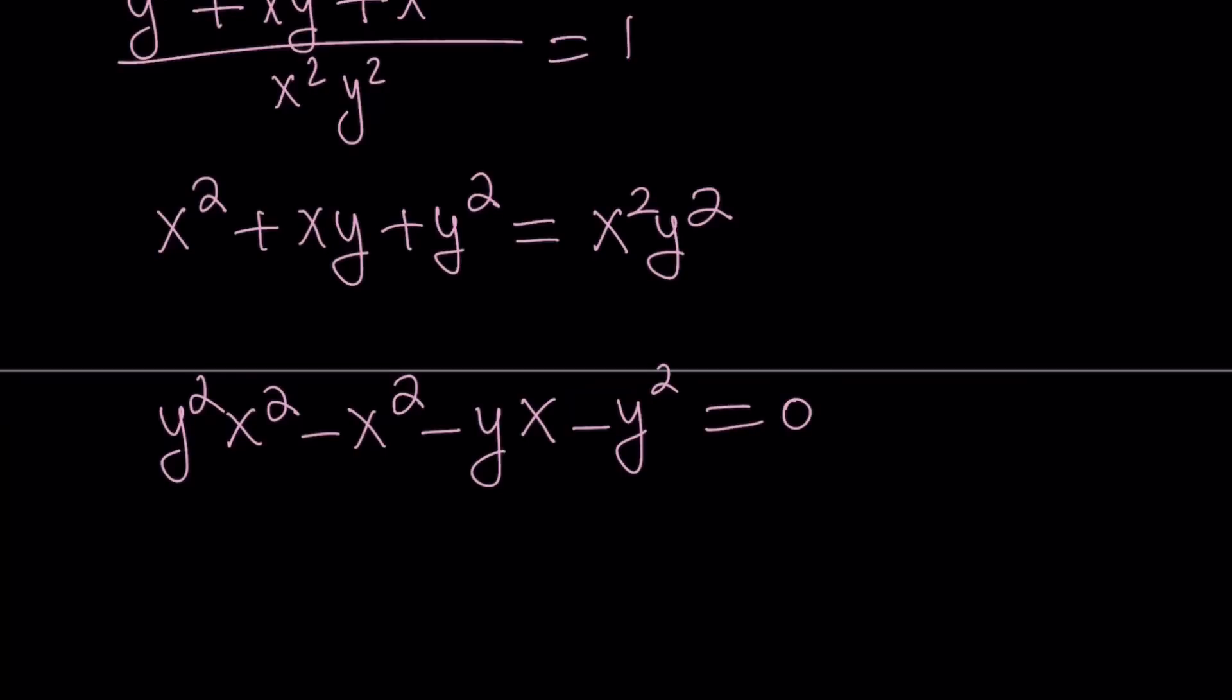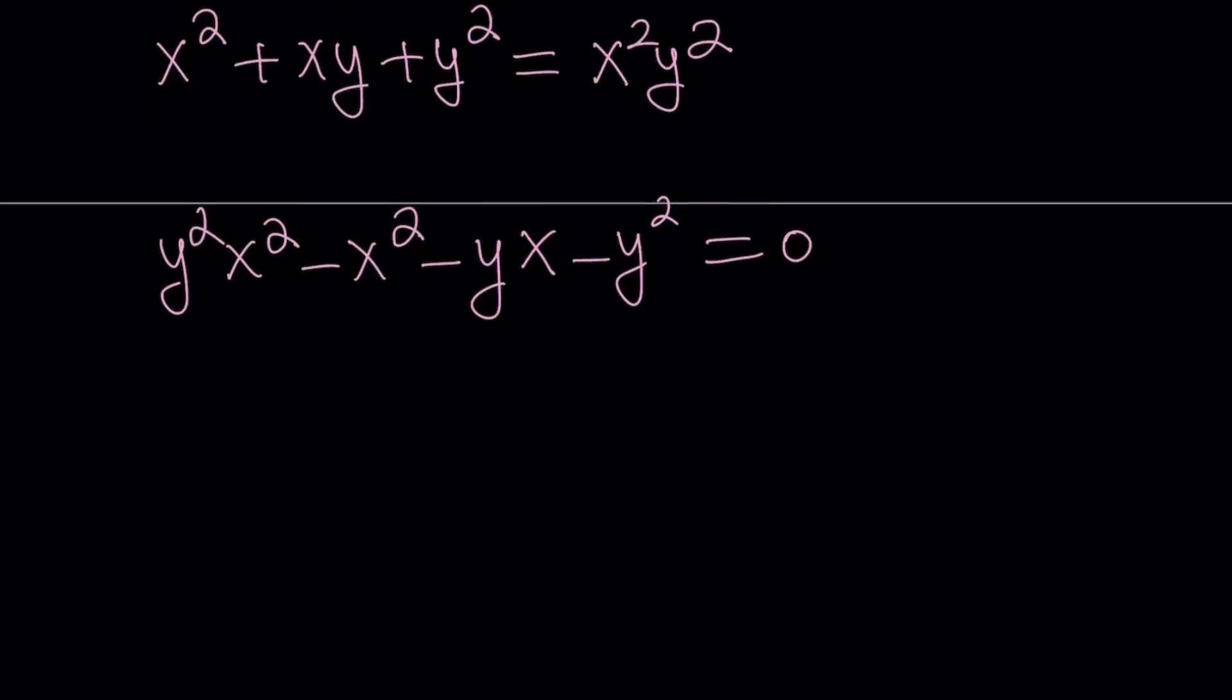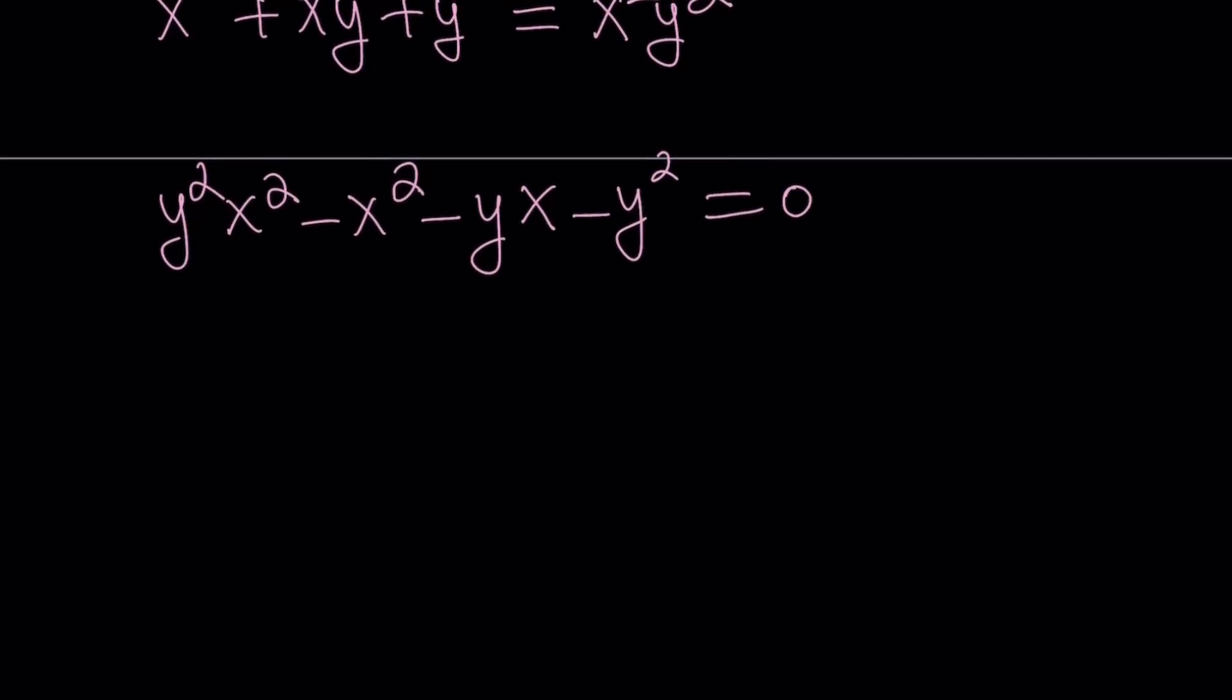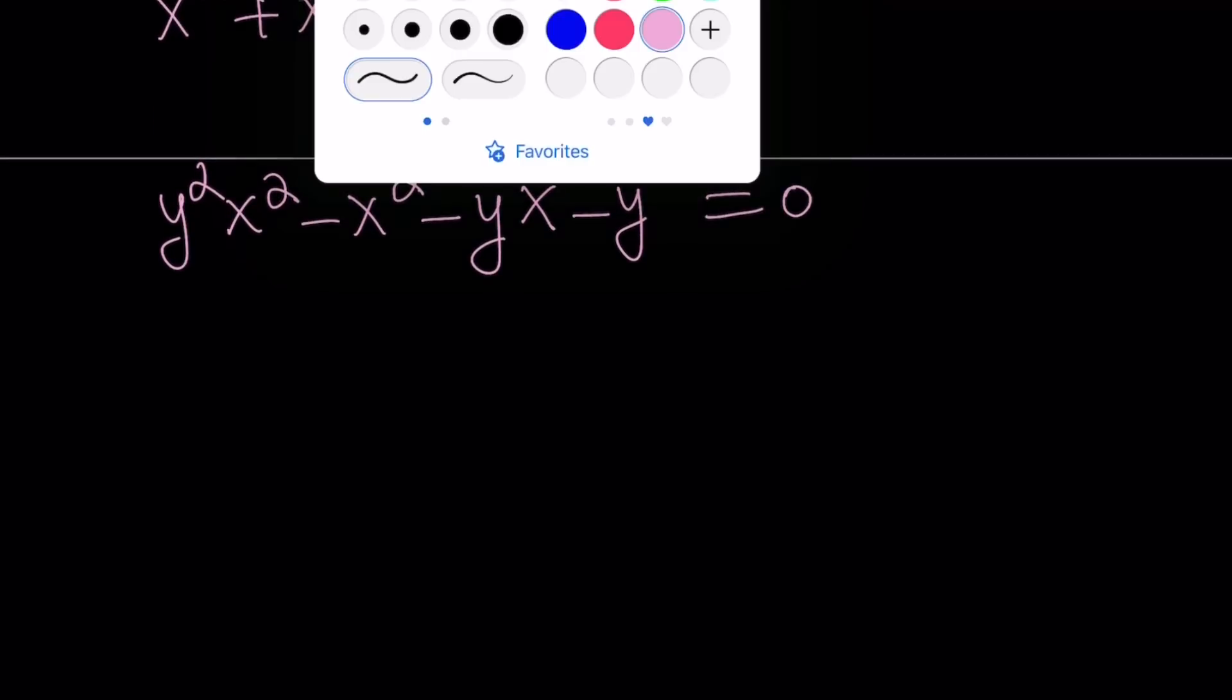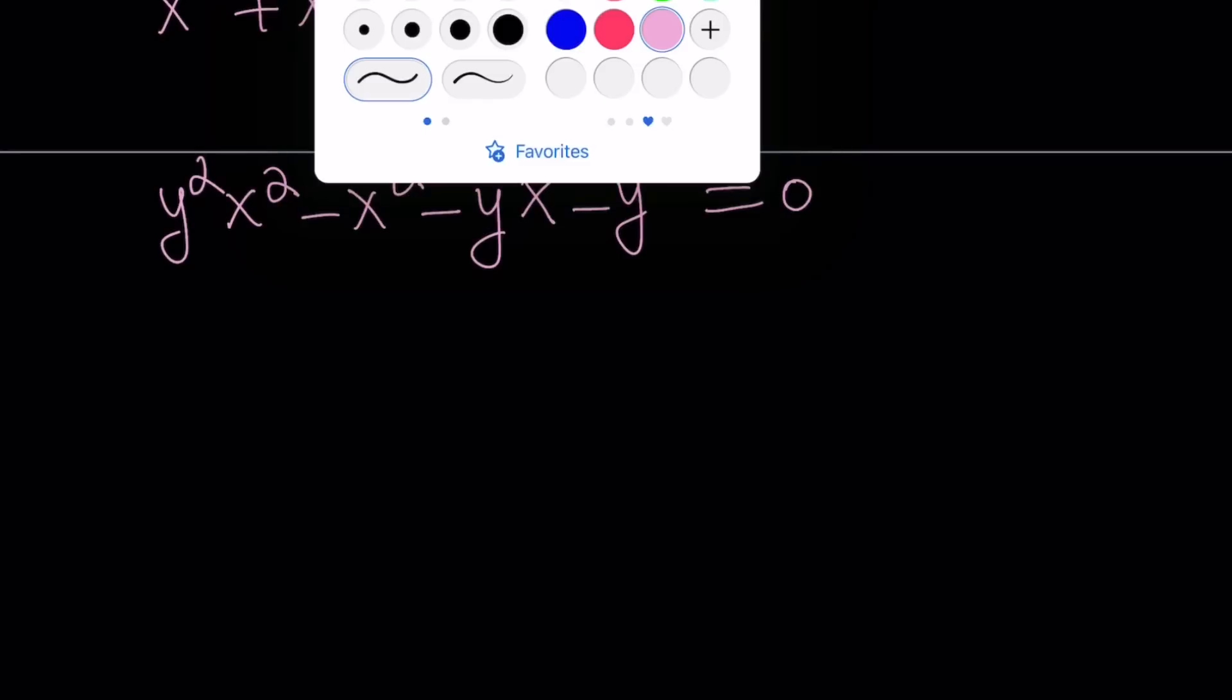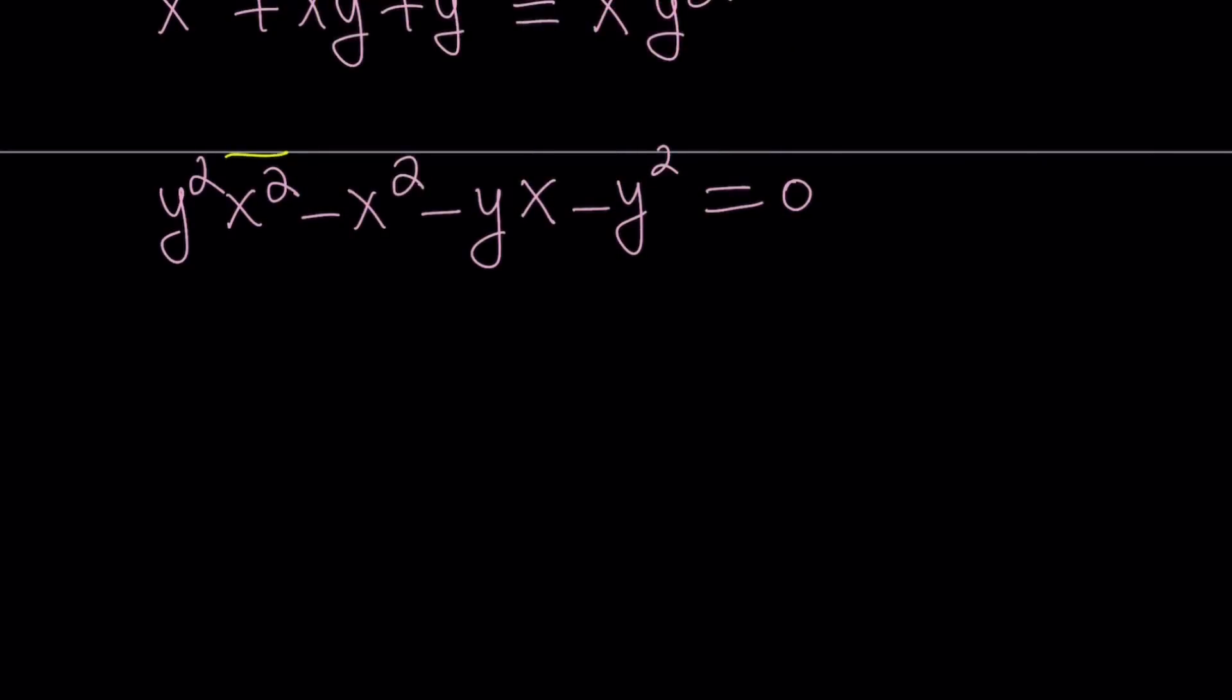Now, the reason why I wrote it that way is I want to make this a quadratic equation in x. So here's our variable. x is the variable. And the others are basically constant. So we have the x squared here, we have the x squared here, and then we have the x here. So let's put these two together. Write it as y squared minus 1 times x squared minus y times x minus y squared equals 0.